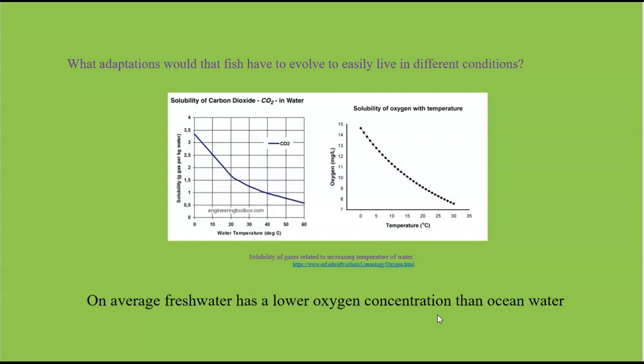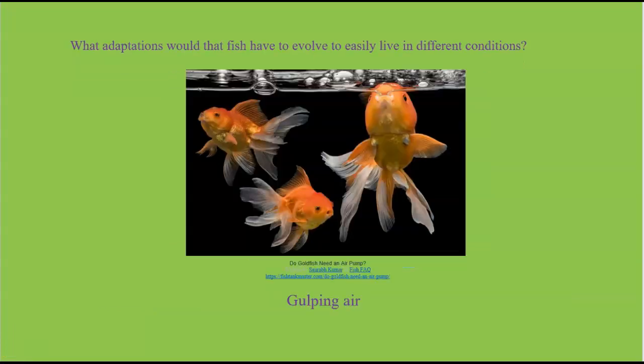So on average, freshwater has a lower oxygen concentration than ocean water. As a result, the fish can't get enough oxygen through their gills, and thus they have to take a big gulp of air to survive. Anyone who's had goldfish would have seen them do this. They absorb the oxygen through the epithelial linings of their gastrointestinal tract.